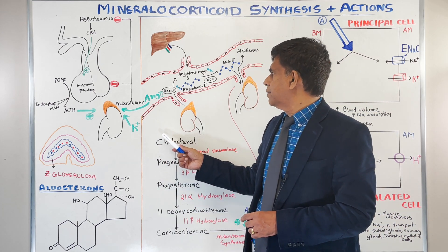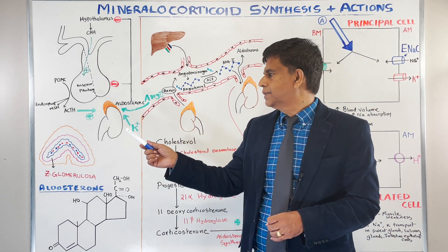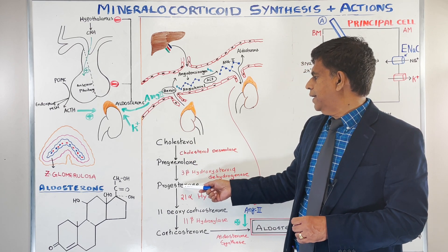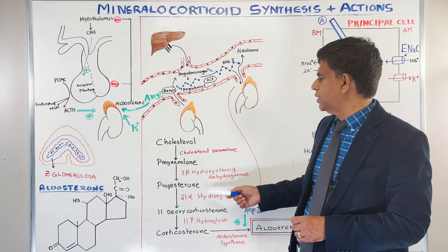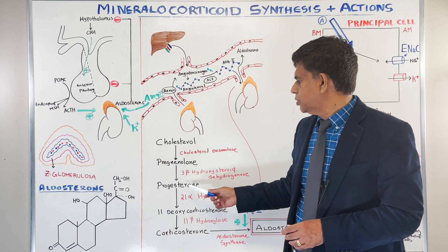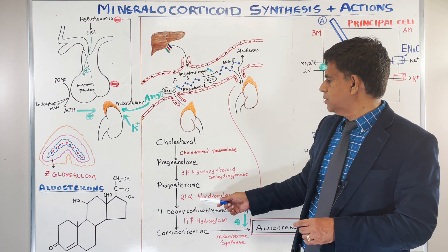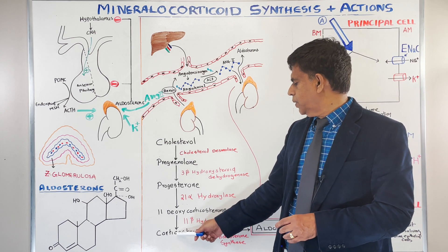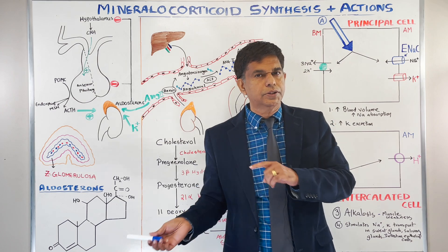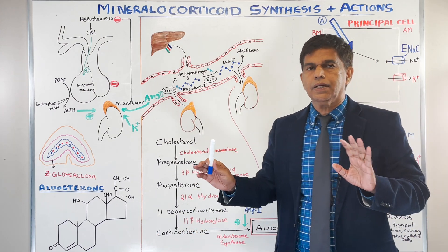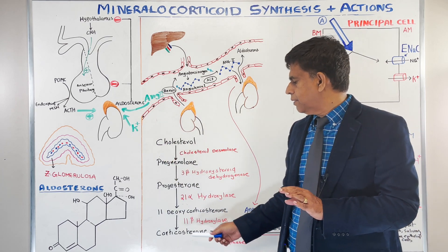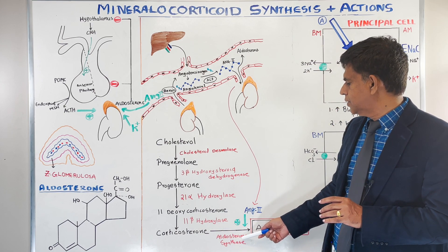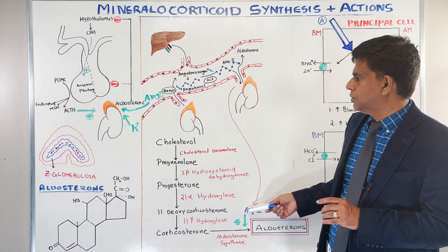Looking at the steroidogenesis pathway: because of ACTH stimulating cholesterol desmolase, cholesterol is converted into pregnenolone. With 3-beta-hydroxysteroid dehydrogenase, pregnenolone is converted into progesterone. Progesterone is then converted into 11-deoxycorticosterone by 21-alpha-hydroxylase, and 11-deoxycorticosterone is converted into corticosterone by 11-beta-hydroxylase. Make sure you know all these enzymes — they are very important and we'll revisit them when discussing pathology.